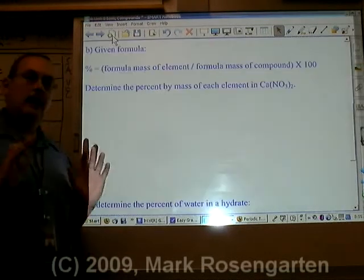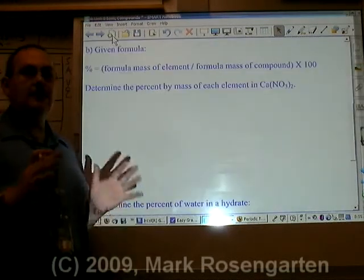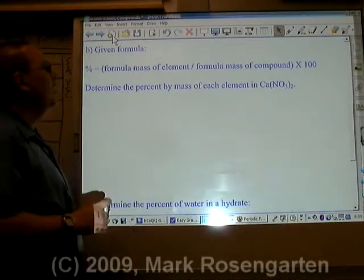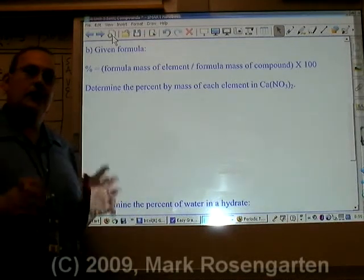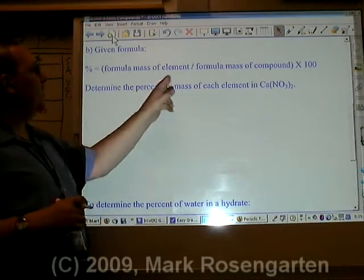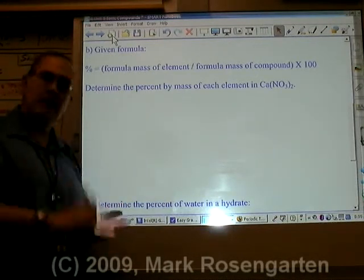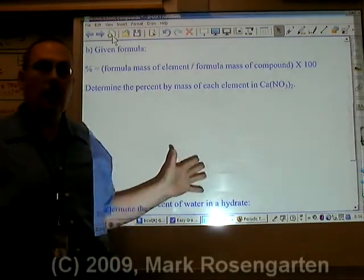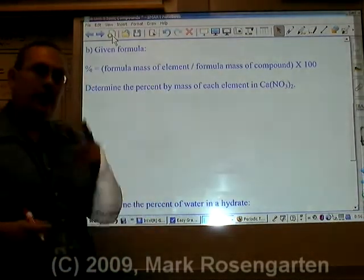Let me show you how you do it with formula mass. If you're given the formula and asked to find the percent composition of an element in that compound, the percent composition of that element is the formula mass of that element (the atomic mass times however many atoms of that element are there) divided by the formula mass of the whole compound times 100.